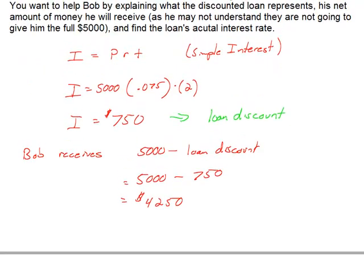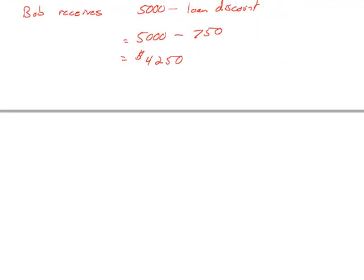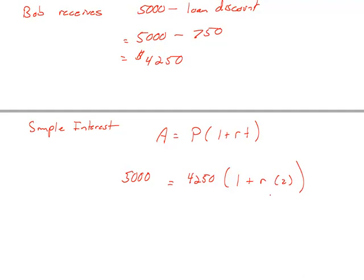In our case, we can do this in one of two ways. We could look back at this formula for I = PRT, or we can remember for simple interest that the future value, we call that A, would be P times (1 + RT), where P is the principal of the loan. So he's starting with $4,250 and he's going to pay the bank $5,000 in two years. What's the rate he's paying for this loan? So he's starting with $4,250, in two years, so the time is 2, and he ends with $5,000. What is that rate? We just need to solve this linear equation.